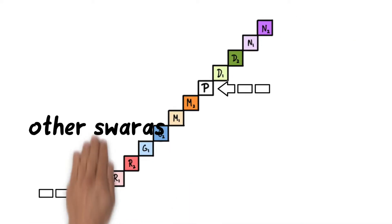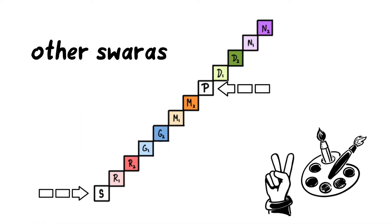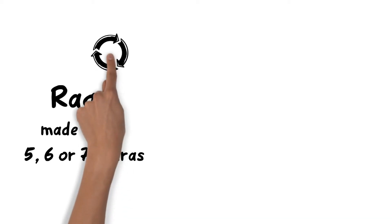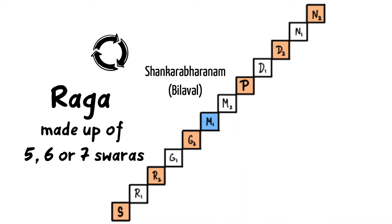Returning to our diagram, Sa and Pa are fixed while the other swaras can be seen as having two different shades. A raga, which is a melodic framework of note progressions, is usually made up of five, six, or seven swaras. A change in position of even one swara entirely changes the raga — for example, the Shankarabharanam or Bilaval raga versus the Kalyani or Yaman raga.